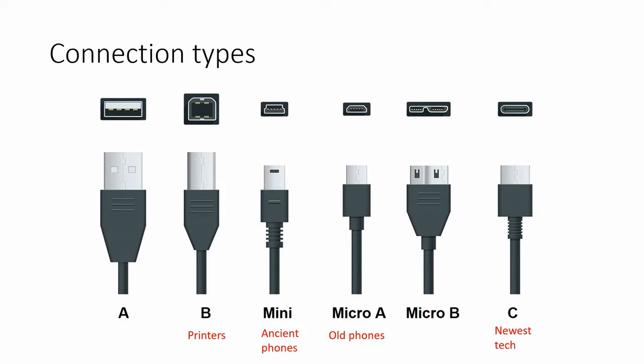Type C is interchangeable between so many different devices, and you can see by the shape of it that it doesn't matter which way you plug it in — it's impossible to put it in upside down. You also have the micro B, which is typically found on USB backup drives like external backup devices.